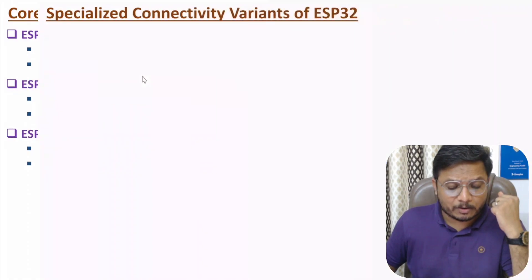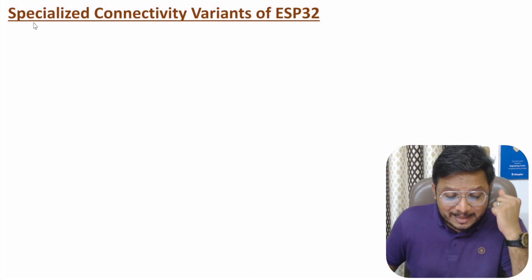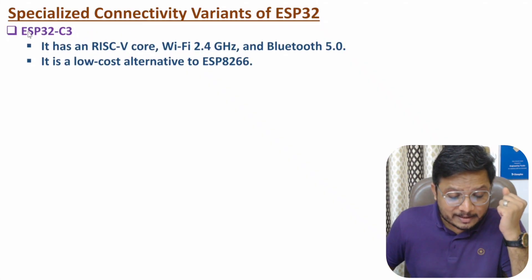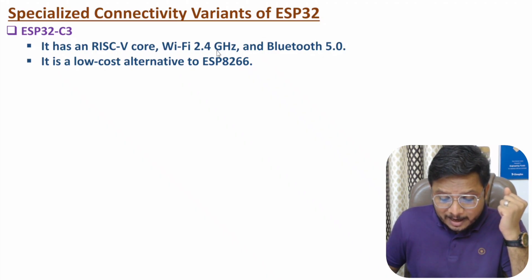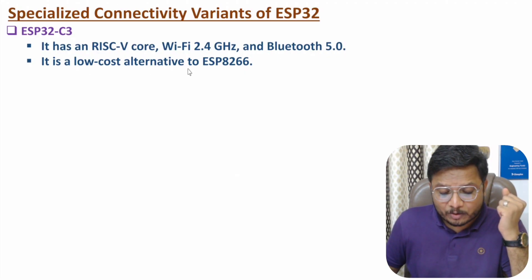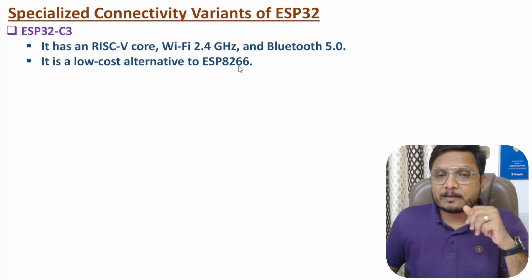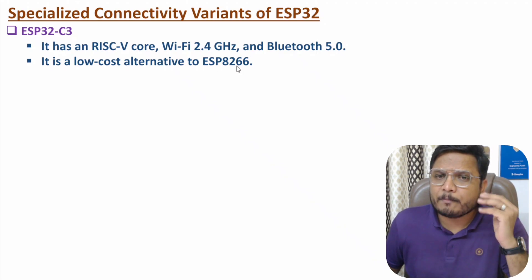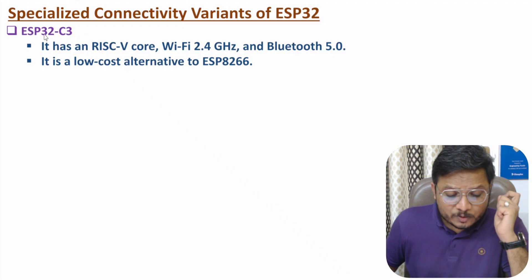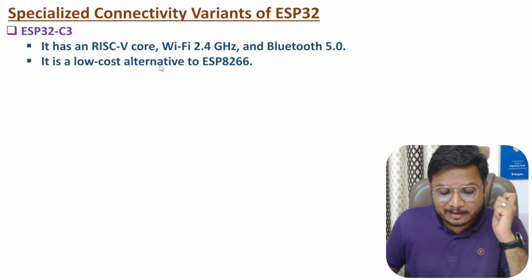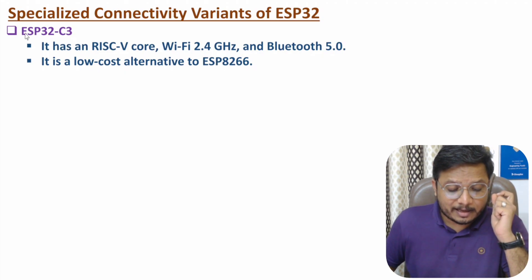Now I'll discuss about ESP32 variants with respect to specialized connectivity. The first variant is ESP32 C3. It has a RISC-V core processor. It has Wi-Fi at 2.4 GHz and it supports Bluetooth 5.0. It is a low cost alternative to ESP8266. With earlier IoT applications, many people were using ESP8266, and with ESP32 C3 we have a low cost alternative to this.